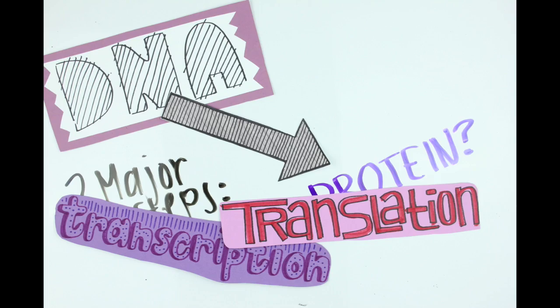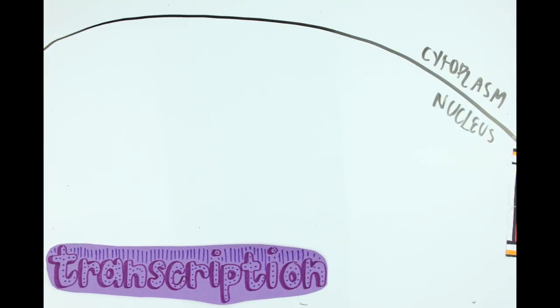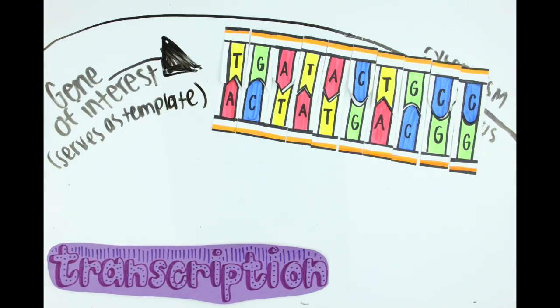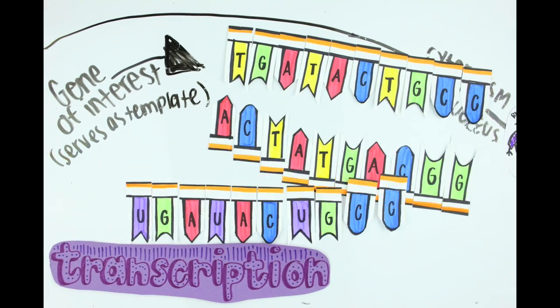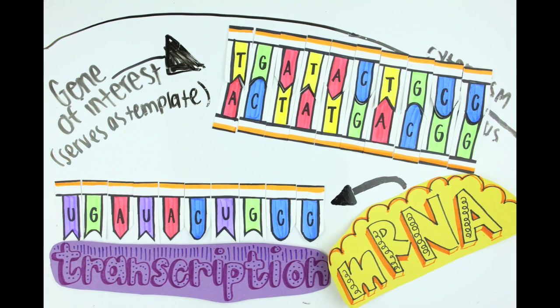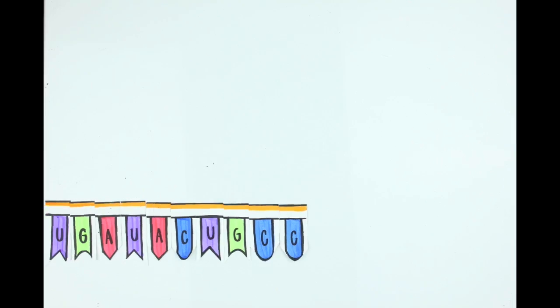When both happen, the gene is being expressed. Transcription occurs in the nucleus and involves copying the gene of the desired protein. DNA starts as a template to make the copy, and the enzyme RNA polymerase helps make the copy, which is then called mRNA. It's almost the same as DNA, but has uracil nucleotides in the place of thymines and it's only single-stranded.